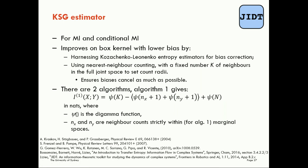The KSG estimator is designed specifically for mutual information and conditional mutual information calculations. It's not directly doing entropies for us. If you want to get an entropy estimate using a nearest neighbor method, you can use the Kozachenko-Leonenko entropy estimators, which are also implemented in the JADT toolkit.